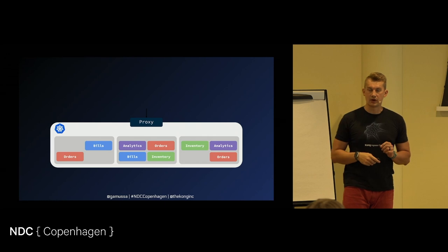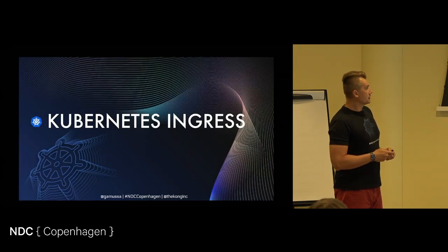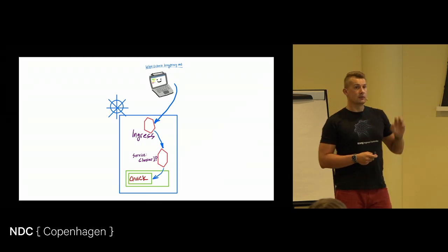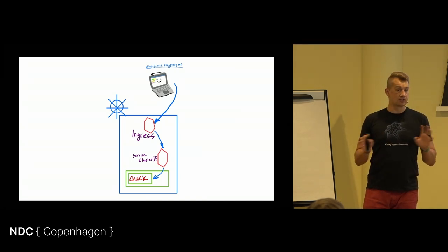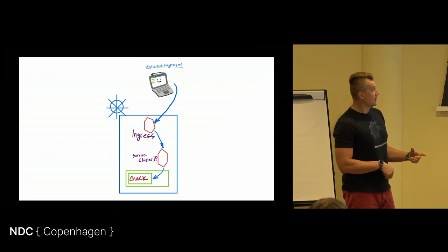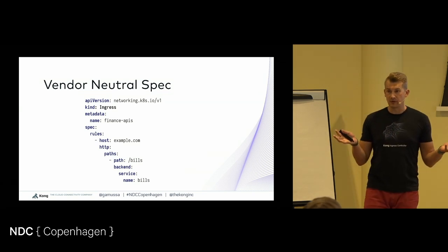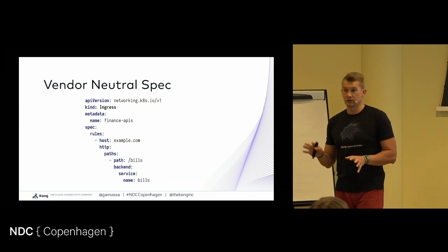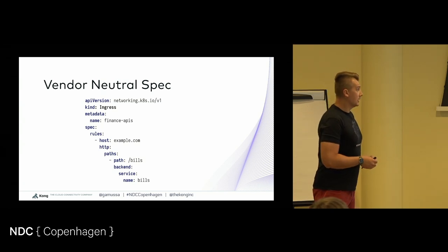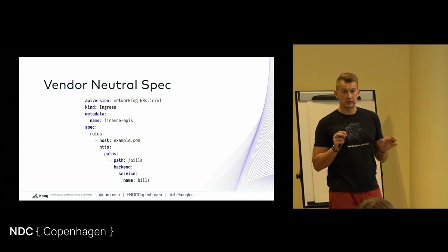Ingress was designed to be the resource that will be bound to one load balancer and will route traffic based on routes to different services. So that's where we're going into Kubernetes Ingress. You still can have a Service that will be addressable inside your application, because sometimes your applications need to communicate with each other. We're going to be using Ingress to access services from outside. From a YAML perspective, this is how it looks — it's a vendor-neutral specification, nothing to do with any particular provider like HAProxy, Nginx, or Traefik.